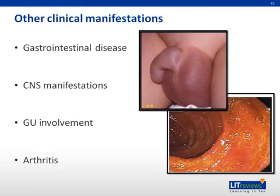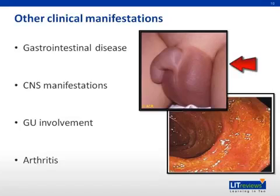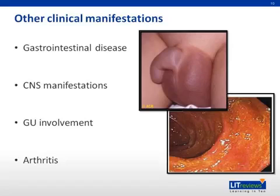Neurologic manifestations are less common and may be secondary to elevated blood pressures or central nervous system vasculitis. Localized subcutaneous edema is also common, as illustrated by this picture of scrotal swelling. Other potentially affected areas include the dorsum of the hands and feet, periorbital area, lips, and scalp.